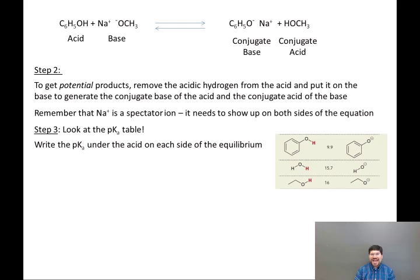Now that you have an acid on each side, you go look at the pKa table. And I've reproduced the relevant portion of the pKa table on this slide. Write the pKa under the acid on each side of the equilibrium expression. The pKa table is defined for acids. Yes, you can use it indirectly to measure the strength of bases by measuring the pKa of the conjugate acid. So C6H5OH on your pKa table has a pKa of 9.9.